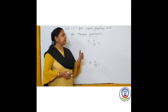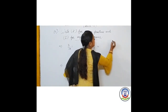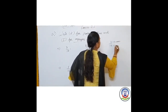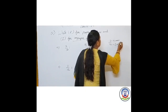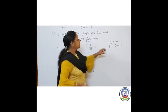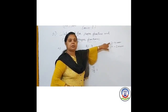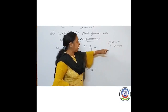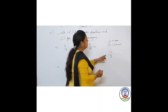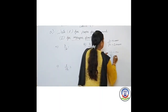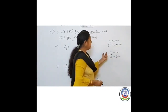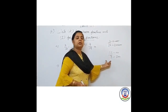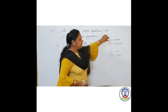Proper fractions are those where the numerator is the upper number. For example, we have written 3 upon 12 — so 3 is our numerator and 12 is our denominator. In a proper fraction, the numerator is smaller than the denominator; in an improper fraction, the numerator is larger.